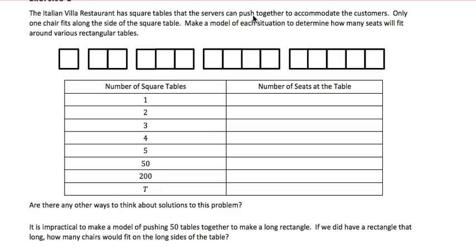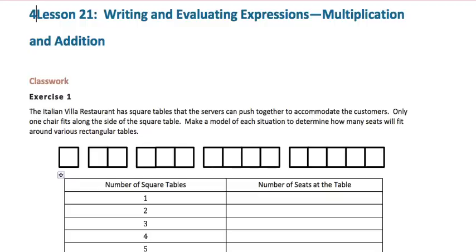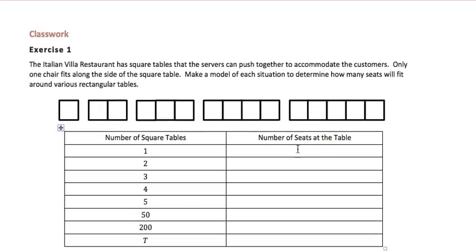So a model has been given for us to show, first of all, if there's 1 square table, there are 4 seats at the table. If there are 2, please notice, 1, 2, 3, 4, 5, 6, there will be 6 people at the table, not 8. It doesn't double when you push them together.